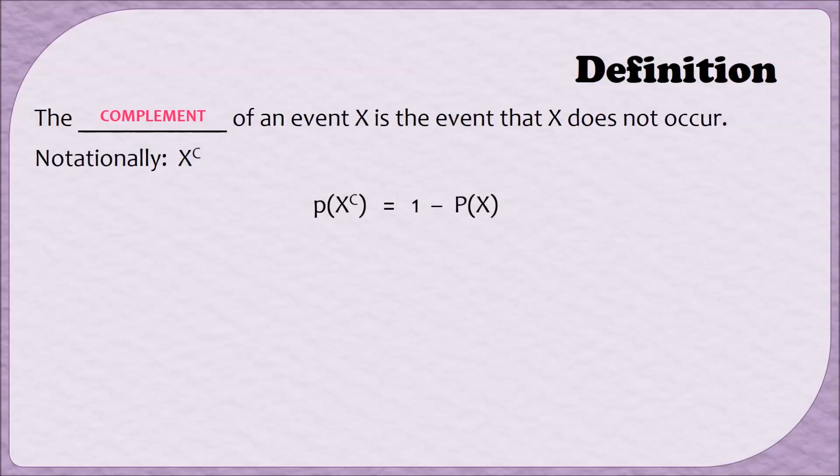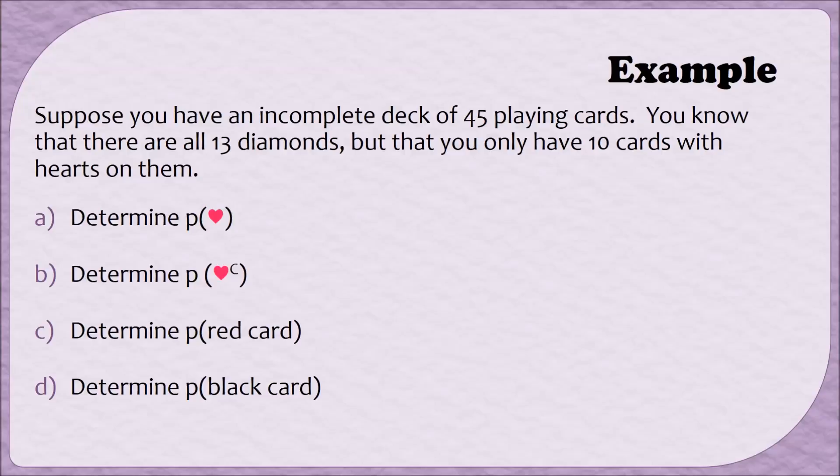Let's do an example. Suppose you have an incomplete deck of 45 playing cards. You know that there are all 13 diamonds, but that you only have 10 cards with hearts on them. Let's find each of the following probabilities. So, for part A, to determine the probability that I will draw a card that has a heart on it, I'm going to take the number of hearts, or 10, and divide that by the number of cards in this incomplete deck, or divide it by 45. Since we weren't told how to express our answer, we could give it as either a fraction in simplest form, or as a decimal. I chose to go with a decimal on this one, so when I divided 10 by 45, I wound up with a repeating decimal of 0.2 repeating. Notice that I'm using the line on top of the 2 to indicate that the 2 is going to repeat.